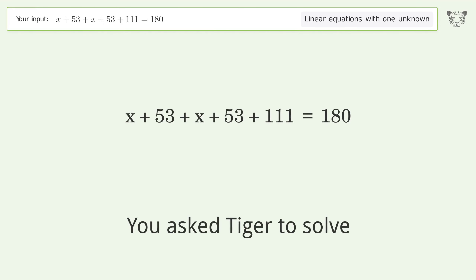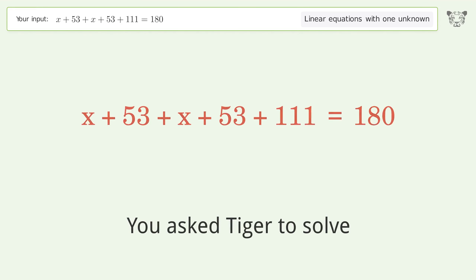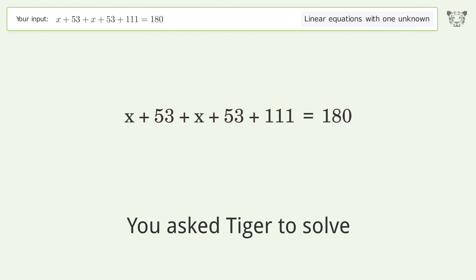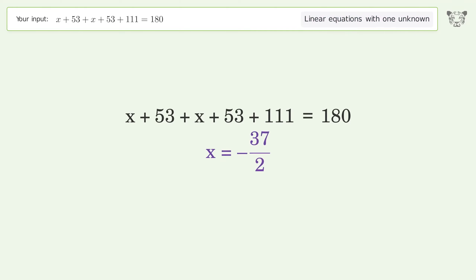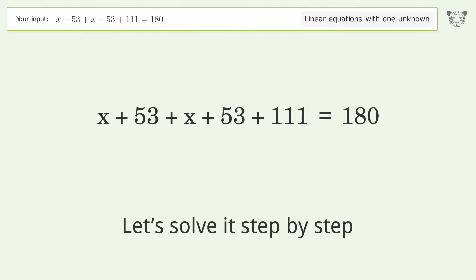You asked Tiger to solve this — it deals with linear equations with one unknown. The final result is x equals negative 37 over 2. Let's solve it step by step.